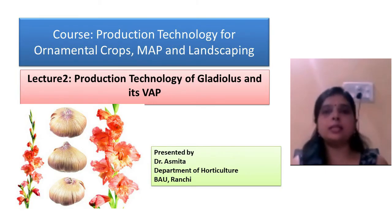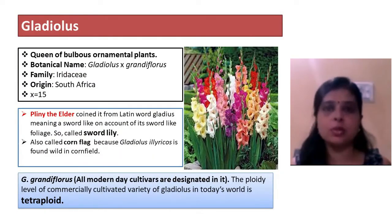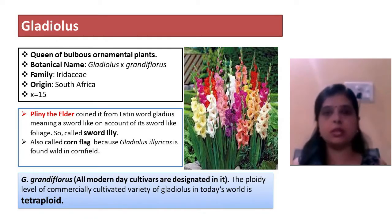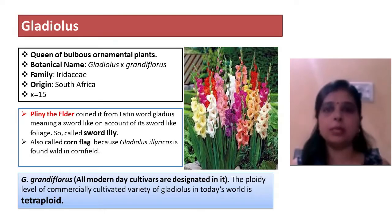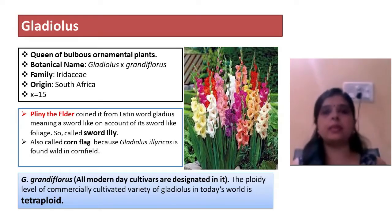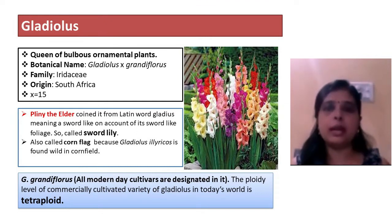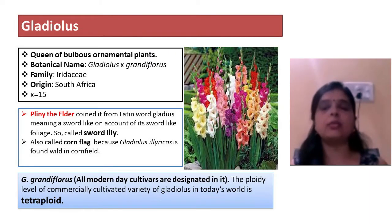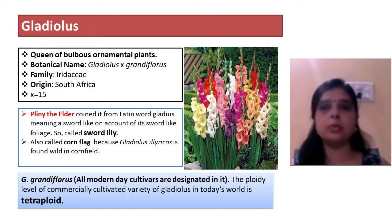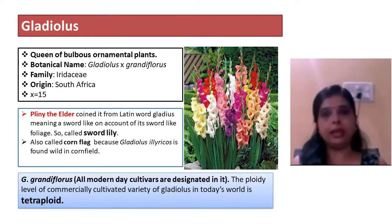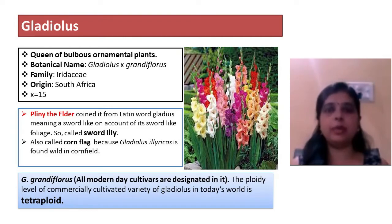In the earlier class we covered rose, which is called the queen of flowers, but gladiolus is called the queen of bulbous ornamental plants. Its botanical name is Gladiolus grandiflorus and it belongs to the family Iridaceae. The flower crop gladiolus has originated in South Africa and the basic chromosome number of gladiolus is 15. The term gladiolus was coined by Pliny the Elder.